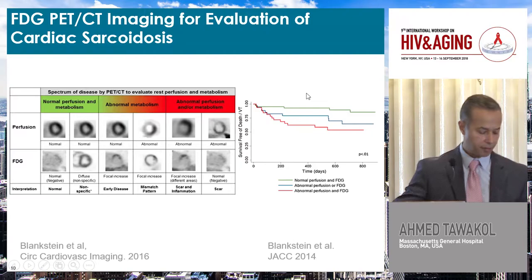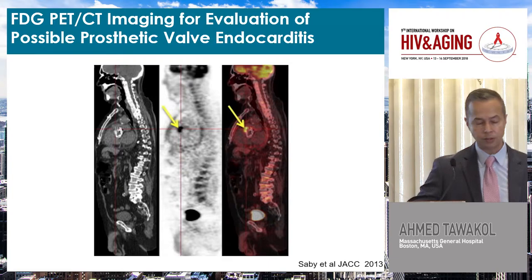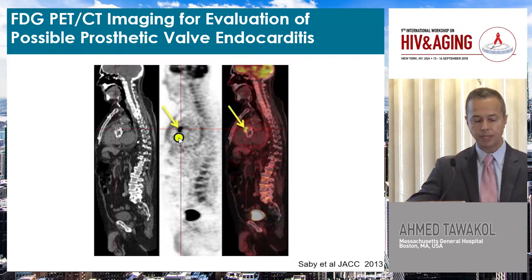Similarly, we use it for assessing infections — FUOs, for example — but here we can use it to look at prosthetic valve endocarditis. You can see the very increased uptake. It doesn't take a lot of training to notice there is a big area of uptake right in the middle of the chest, associating with the mechanical valve.